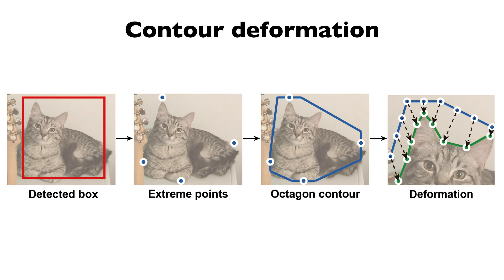Finally, DeepSnake takes the octagon contour as input and outputs offsets pointing to the object boundary, which is used to deform the contour.